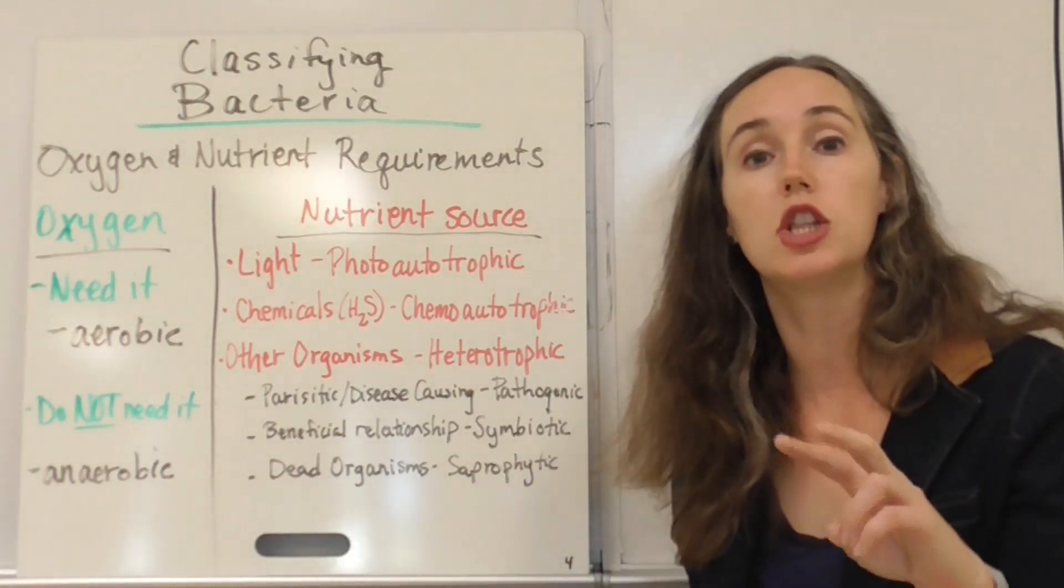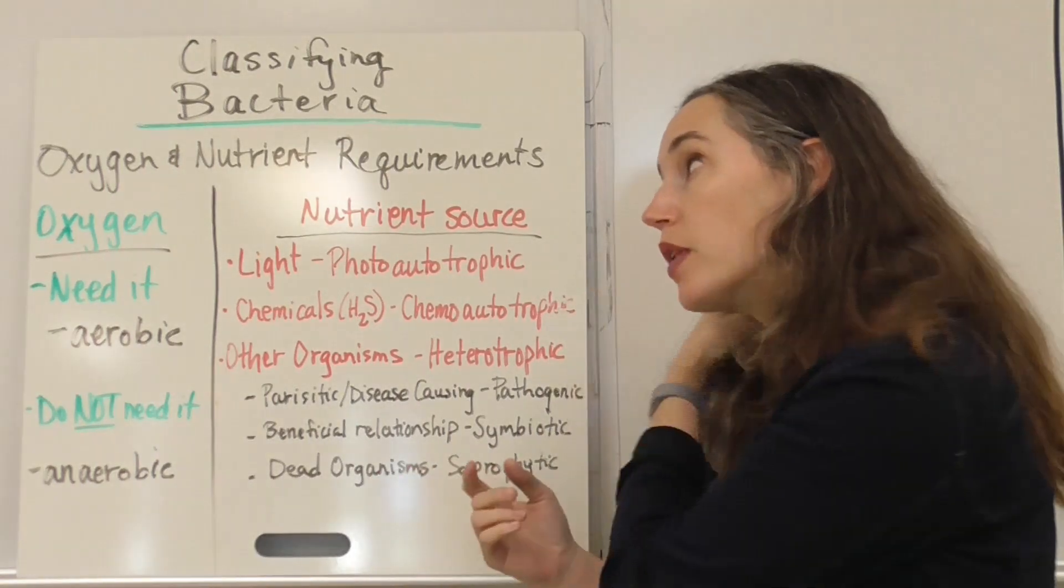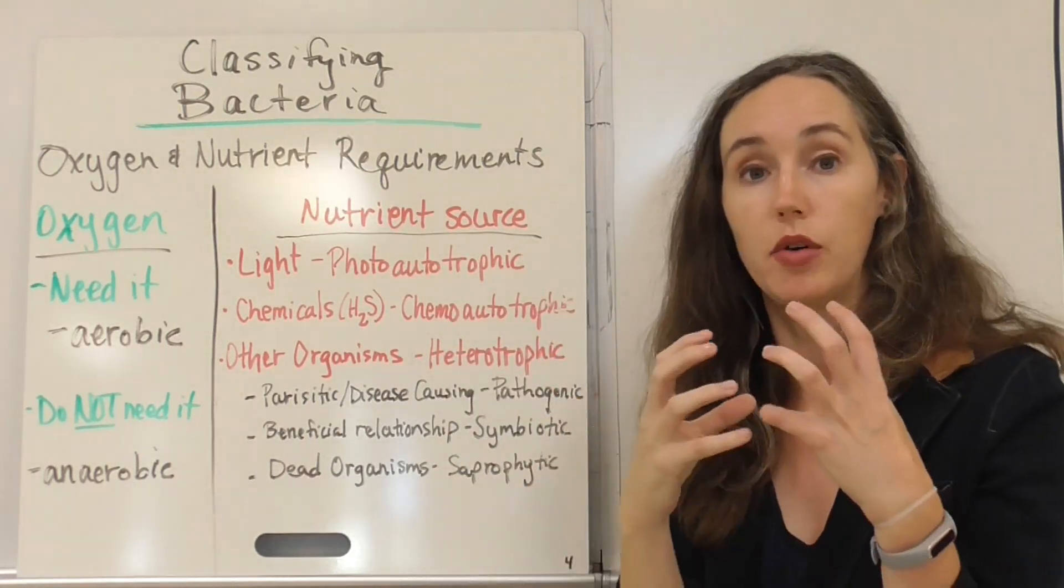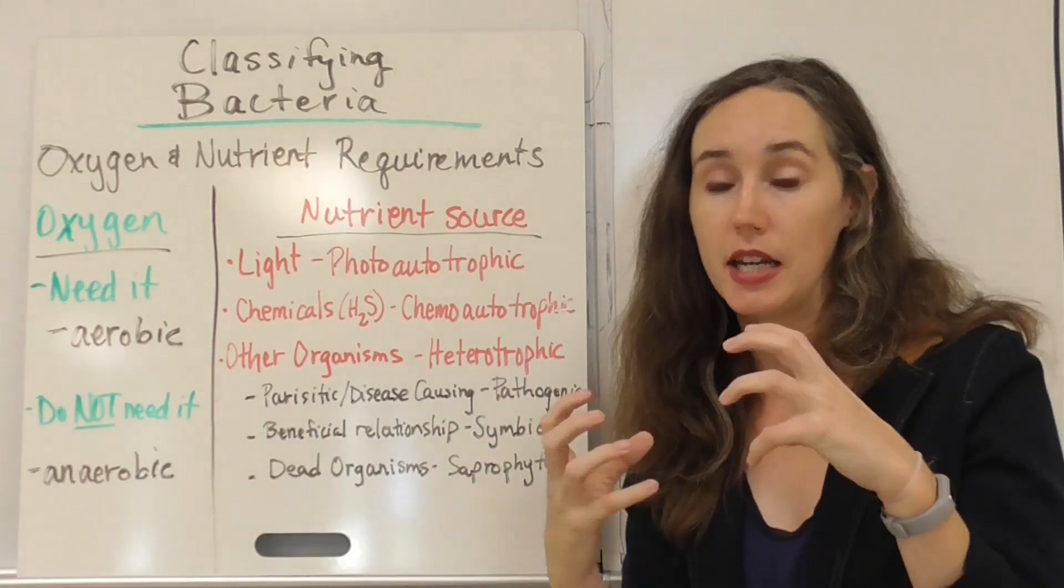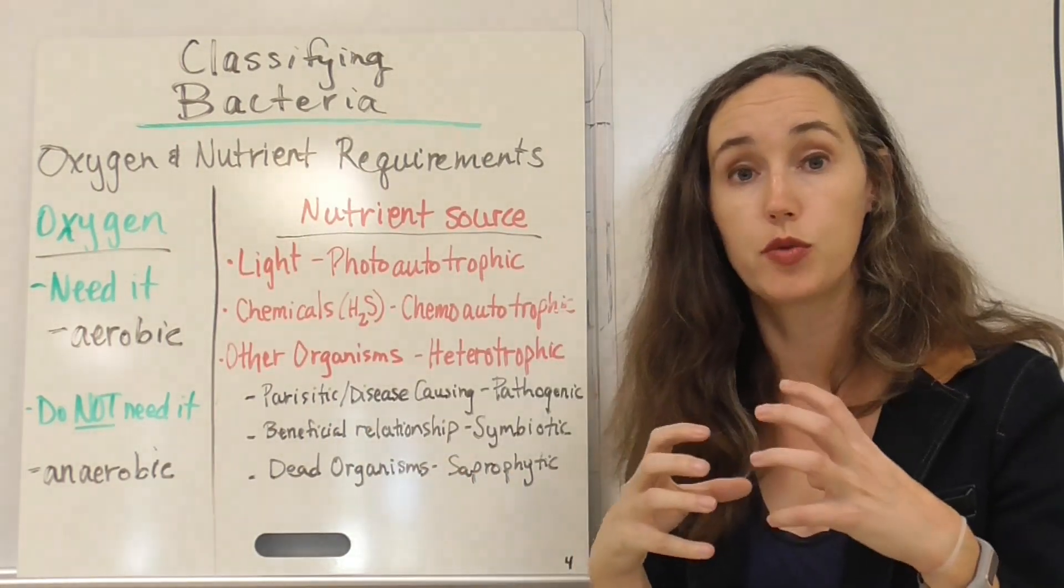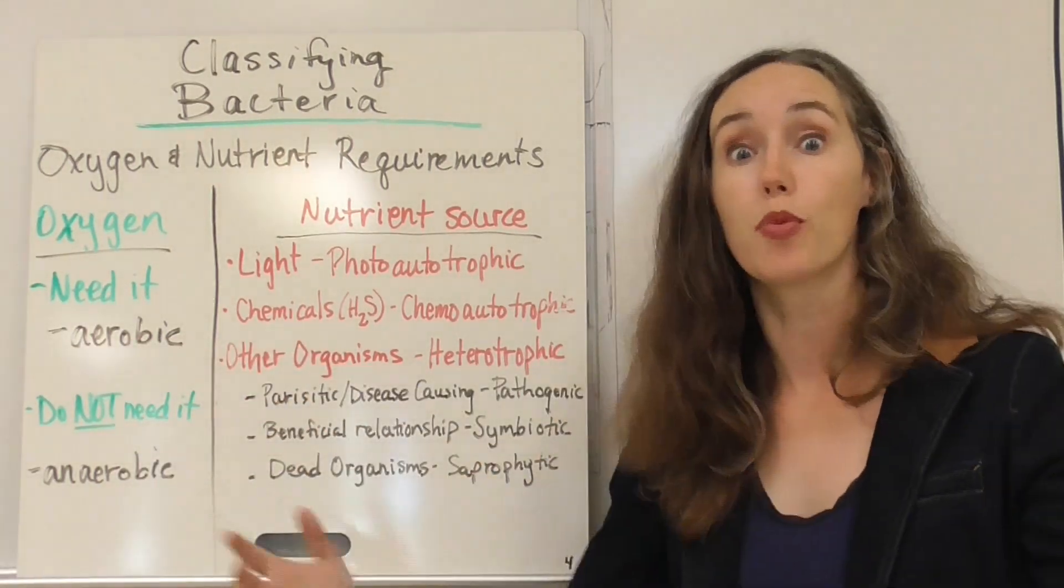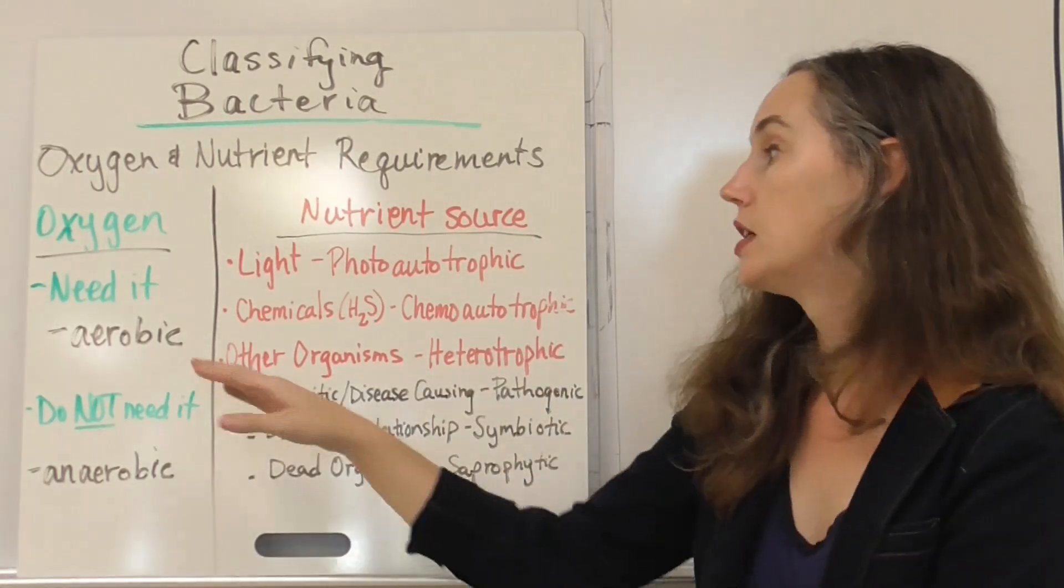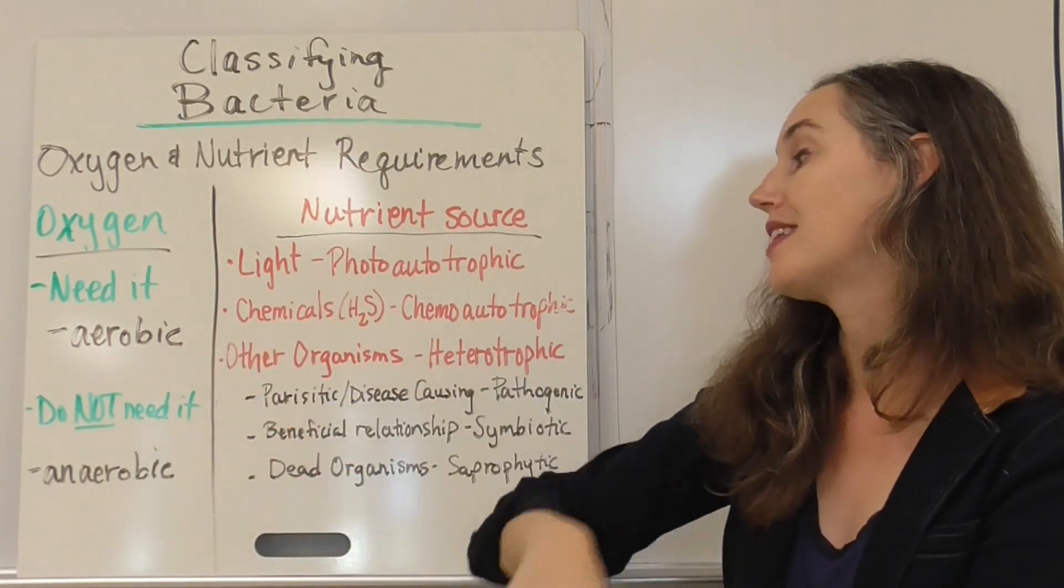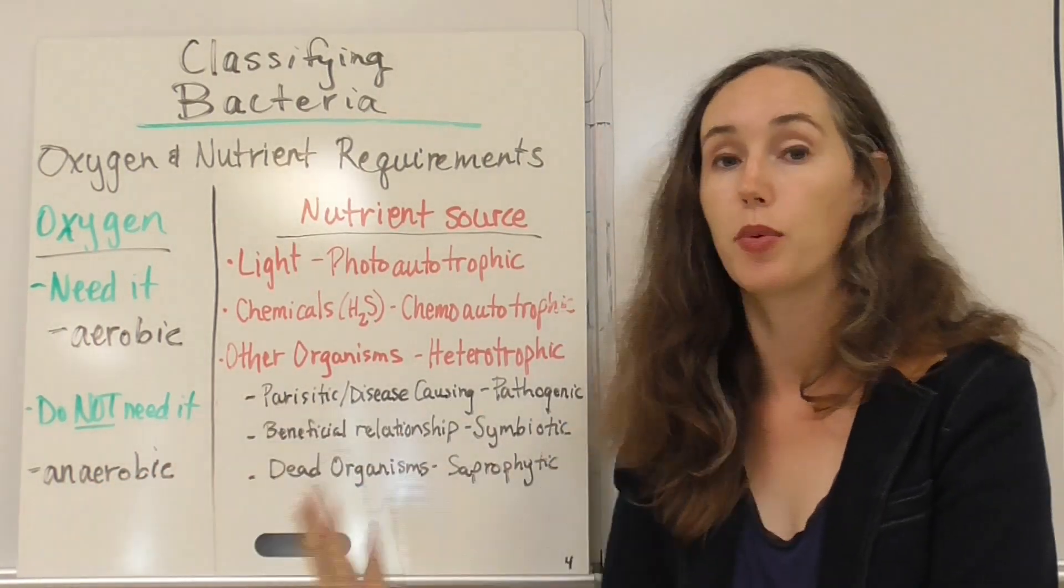And the last two ways is looking at what it needs to survive. So does it need oxygen or not? And then where does its nutrients come from? Oxygen is often used to help any organism break down the food energy it has and get that energy out so it can be usable. So some bacteria need oxygen to break down those food molecules to get energy. And those that do need it are called aerobic. Think about if you do an aerobic workout, you're breathing a lot, you need a lot of oxygen. So aerobic bacteria also need oxygen to break down their food for energy. Then there are ones that do not need that oxygen and they are called anaerobic bacteria. They do not need oxygen in order to break down their food for energy.